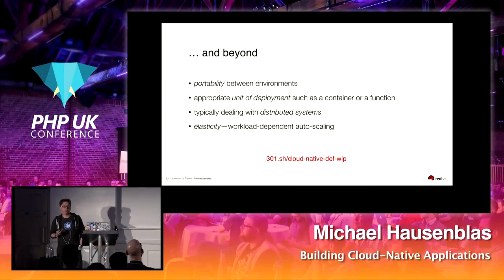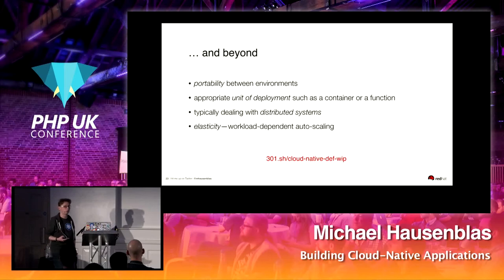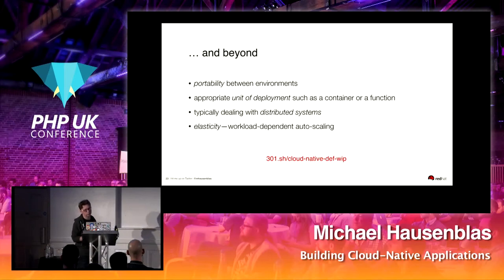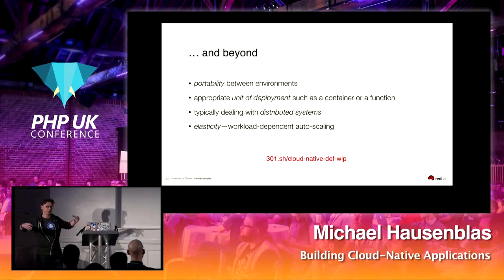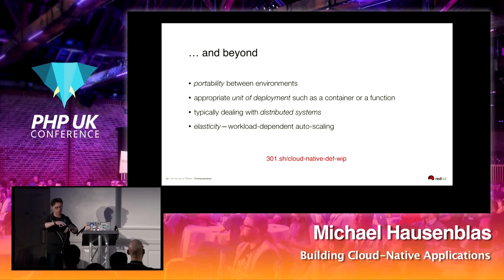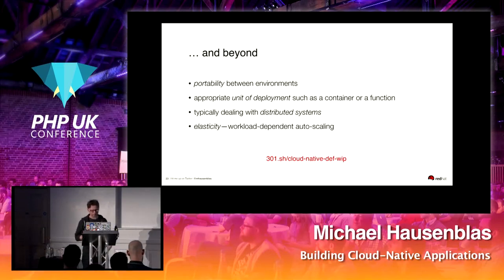One of the most interesting things for many people is elasticity. Depending on the workload — you need metrics, you need to know traffic levels and utilization — it can automatically scale. That can be at the application level: having more instances of the same thing running, which is easy when it's stateless. Or you can add nodes — provisioning a new VM takes longer than spinning up a container, but you're extending your infrastructure as the workload goes up.